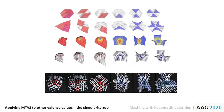The principle can be extended to represent any valence in the set of practically weaveable singularities, from 3 to 9, as can be seen here in our singularity zoo.